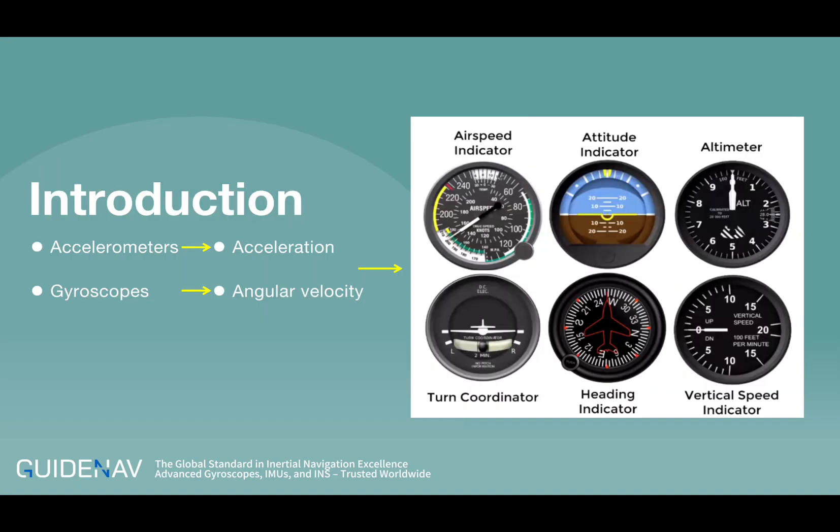The inertial measurement unit measures the acceleration and angular velocity of the object in three-dimensional space through its internal accelerometers and gyroscopes.